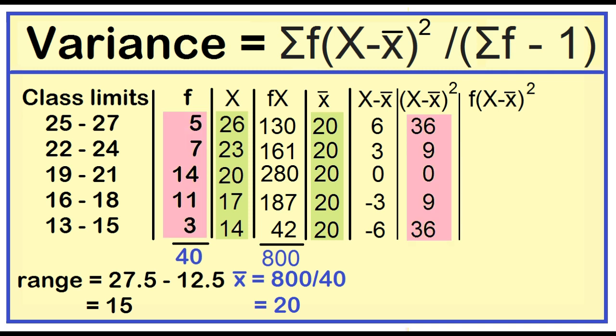Multiply the square deviation to the frequency. 5 times 36 is 180. 7 times 9 is 63. 14 times 0 is 0. 11 times 9 is 99. 3 times 36 is 108. Then add 180 plus 63 plus 0 plus 99 plus 108 is equal to 450.